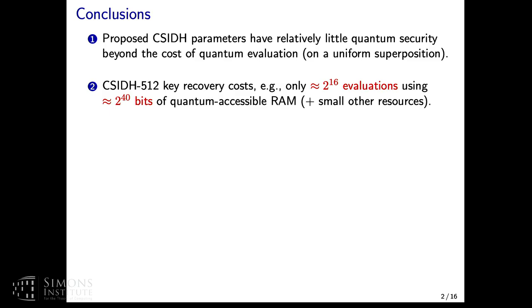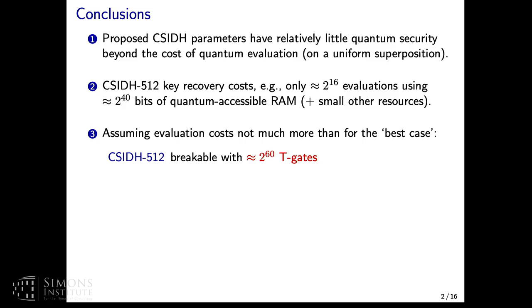For CSIDH-512, which was the lowest parameters proposed, you can do this key recovery in about 2 to the 16 evaluations of the oracle if you use about 2 to the 40 bits of quantum-accessible RAM and relatively small other computational resources. So 2 to the 40 bits is 128 gigabytes, which I think I have in my laptop, although you do have to make it quantum accessible.